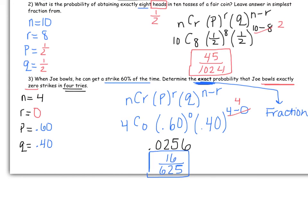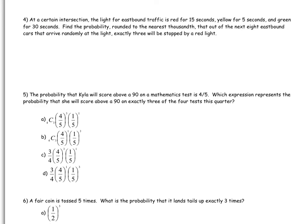Let's move on to the next page. Number 4. At a certain intersection, the light for eastbound traffic is red for 15 seconds, yellow for 5 seconds, and green for 30. Find the probability, rounded to the nearest thousandth, that out of the next 8 eastbound cars that arrive randomly at the light, exactly 3 of them will be stopped by a red light.